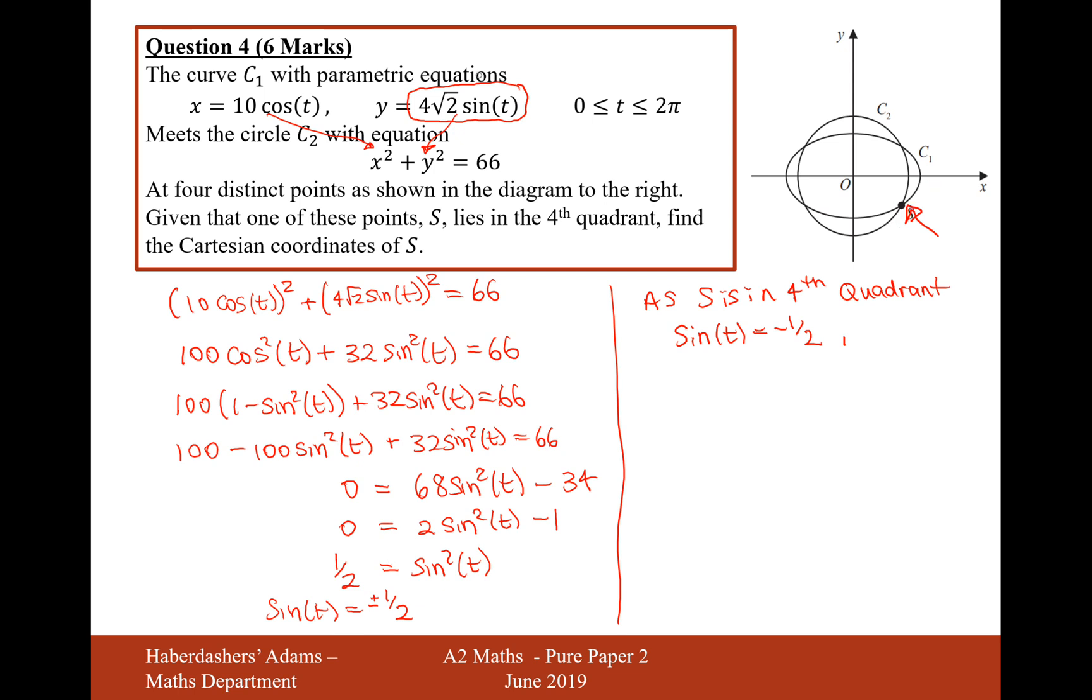If I put the positive answer in, I'm going to get a positive y coordinate, but I don't want to do that. I want to get a negative y coordinate. So therefore, if I plug it in and put 1 over root 2 into the equation, it's going to be minus 4.